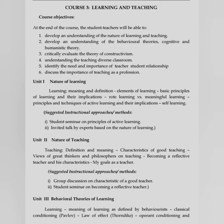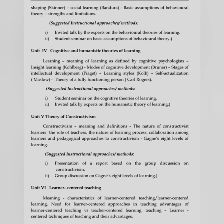Unit 3 is Behavioral Theory of Learning: meaning of learning as defined by the behaviorist; classical conditioning — Pavlov; law of effect — Thorndike; operant conditioning and shaping — Skinner; social learning — Bandura; basic assumptions of behavioral theory; strengths and limitations. Unit 4 is Cognitive and Humanistic Theory of Learning: meaning of learning as defined by the cognitive psychologist; insight learning — Kohler; modes of cognitive development — Bruner; stages of intellectual development — Piaget; learning style; self-actualization — Maslow; theory of a fully functioning person — Carl Rogers.